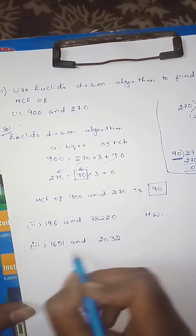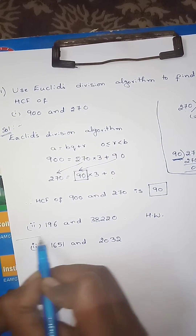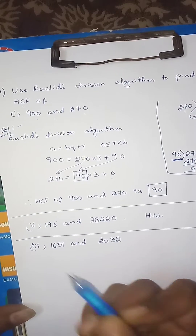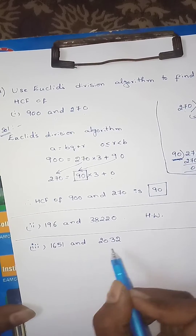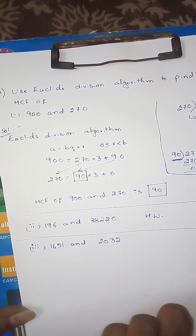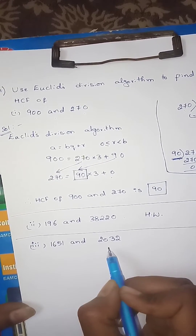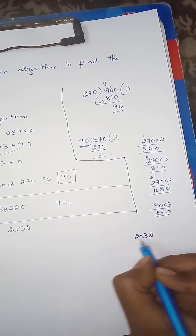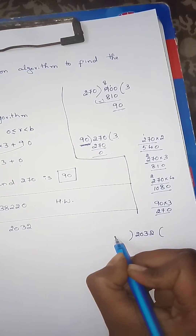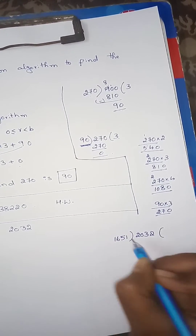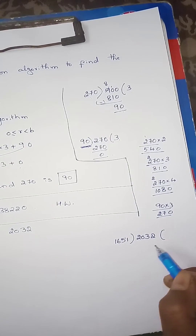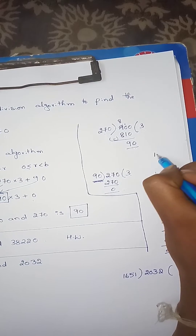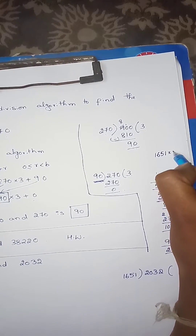We have the two numbers 1651 and 2032. We will again apply Euclid's division algorithm. 2032 divided by 1651: the first step gives quotient 1.